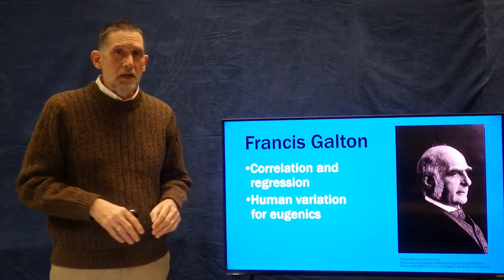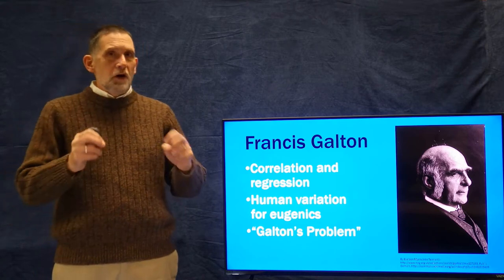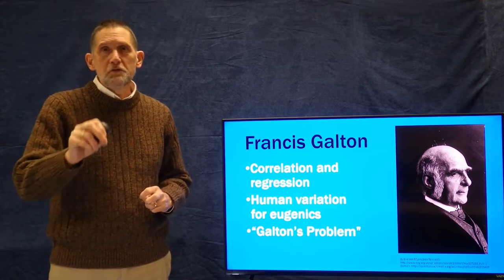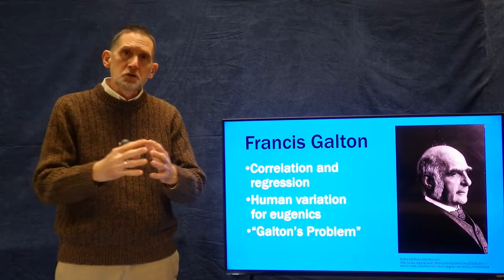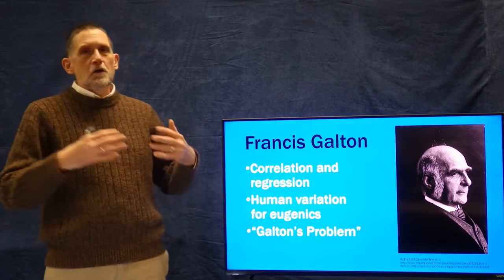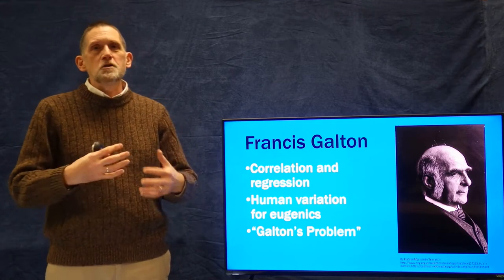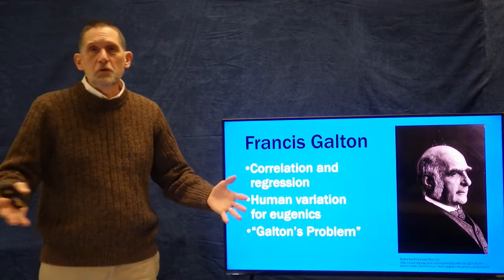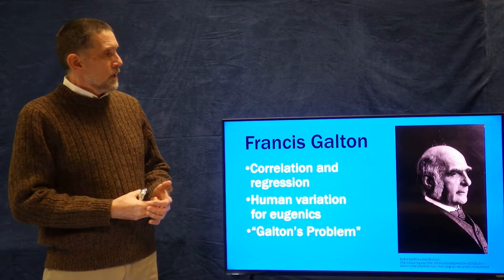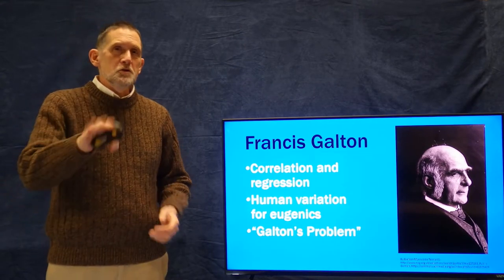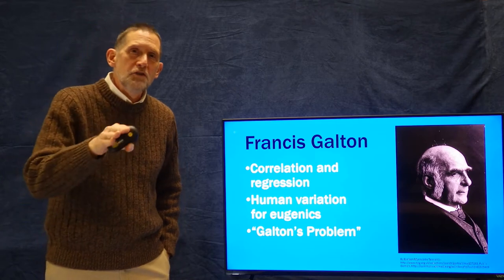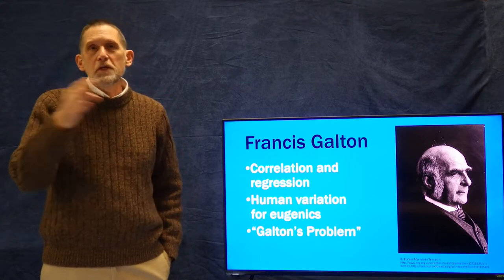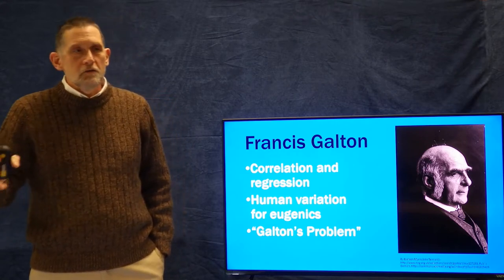To do that, he developed a number of conceptual ideas about how to measure variation in order to see how it can change over time. One thing that's really important in anthropology — especially if you do ethnology, which is comparative anthropology — is something called Galton's Problem. It comes out of a discussion when Galton was president of the Royal Academy of Sciences and E.B. Tylor gave a presentation comparing different cultures.